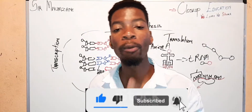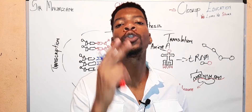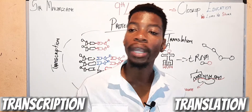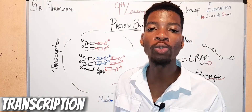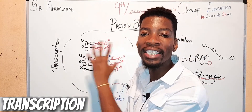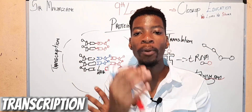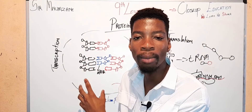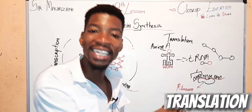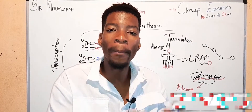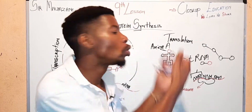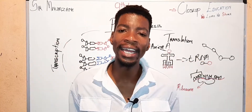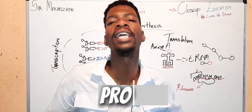Let's recap. We said protein synthesis consists of two steps: transcription and translation. Transcription is whereby the information of the protein gene is collected from the DNA molecule. Translation is whereby that information is used to collect amino acids, which form a chain that will make a protein.